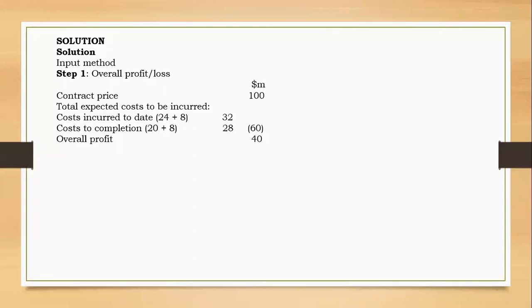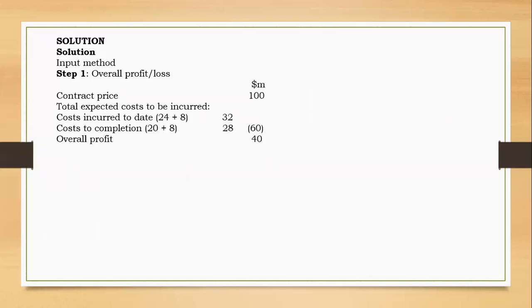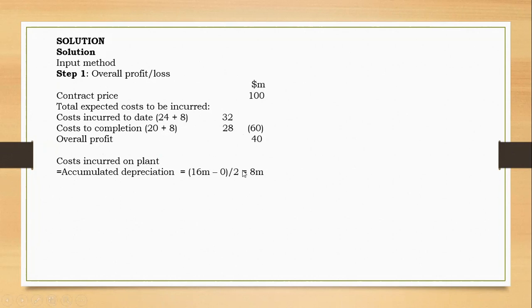Costs incurred to date were 24 million, costs to completion were 20 million. But we are told Nagy purchased the plant in addition — that means this cost of the plant has not been incorporated into costs incurred or estimated future costs. When you encounter a non-current asset like this, you have to depreciate it. The accumulated depreciation goes to costs incurred, and the remaining carrying amount goes to estimated future costs. I'll use the cost of the plant to determine the cost incurred as accumulated depreciation: cost minus carrying amount — 16 over 2 gives 8 million per year.